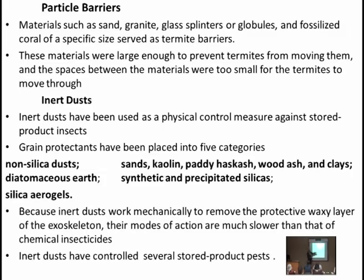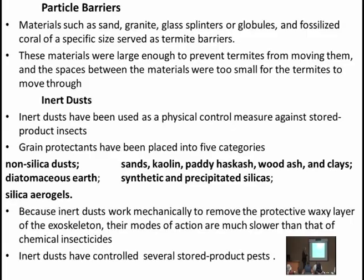المواد الطاردة المستخدمة كـ inert dusts مثل الرمل، وkaolin، وpaddy husk، وdiatomaceous earth وهو سيليكا اصطناعية، تُخلط مع الصوامع أو الأكياس التي تحتوي المحاصيل المخزونة لطرد الحشرات ومنعها من إكمال دورة حياتها. هدفها الطرد أو إصدار روائح تُنفر الحشرات من هذا المكان.